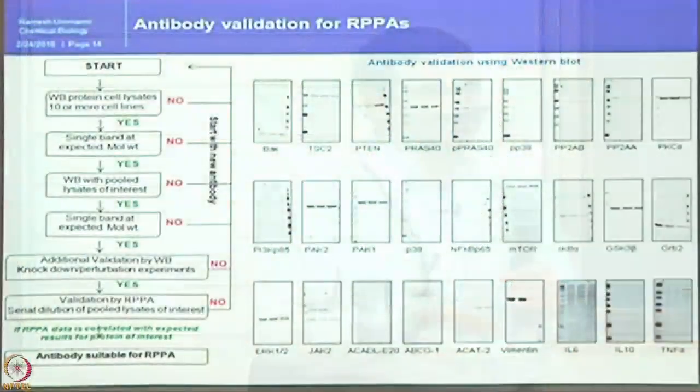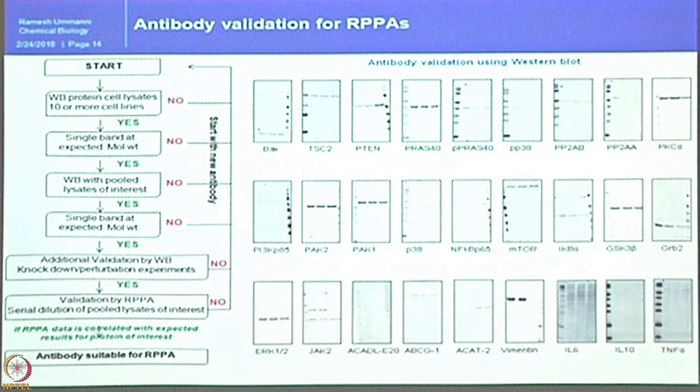These three terms — go, use with caution, no go — are commonly exchanged in the RPPA community. Running hundreds to thousands of Western blots for validation is standard. Some antibodies give very clean single bands, while others show non-specific bands that render them unusable.